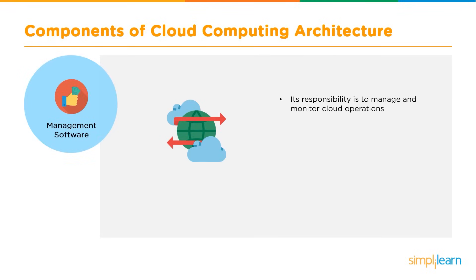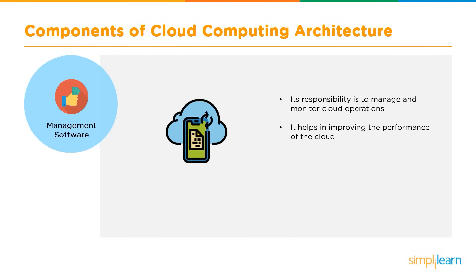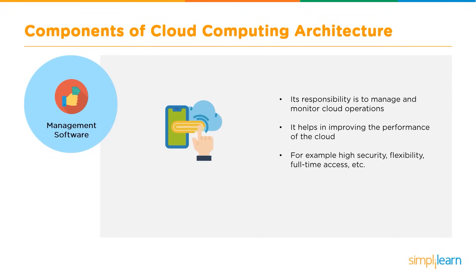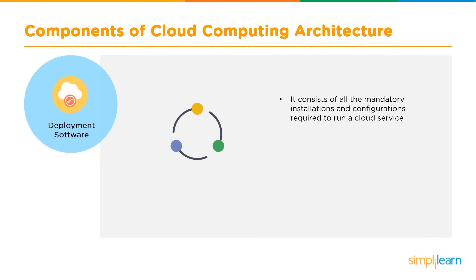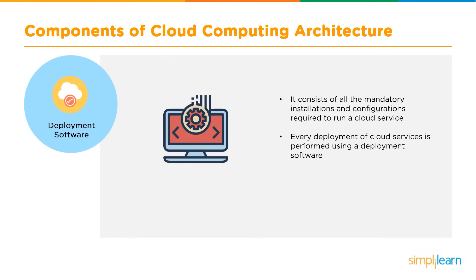The management software is responsible for managing and monitoring cloud operations — all operational tasks are handled by it. It helps improve cloud performance and enables admin tasks such as high security, flexibility, full-time access, and access management for other users on the platform. The deployment software consists of all mandatory installations and configurations required to run a cloud service, and is primarily used for deploying applications or software, saving developers time in deploying their code.